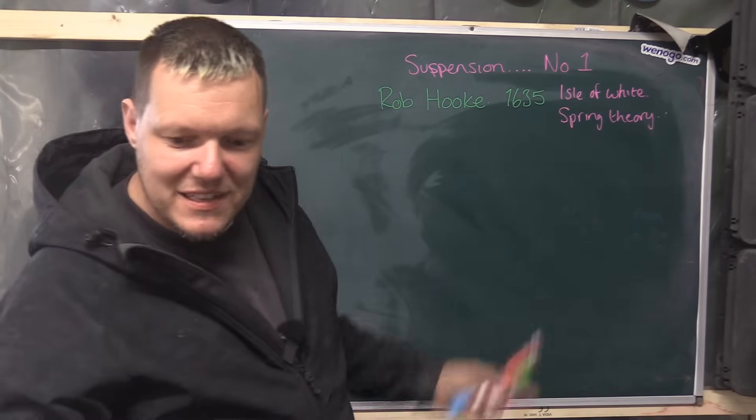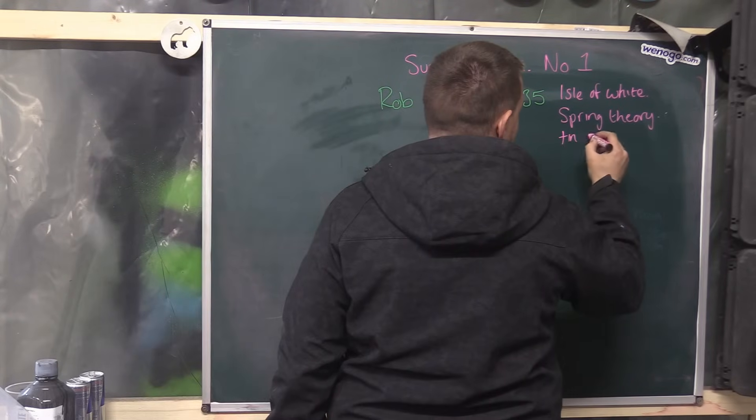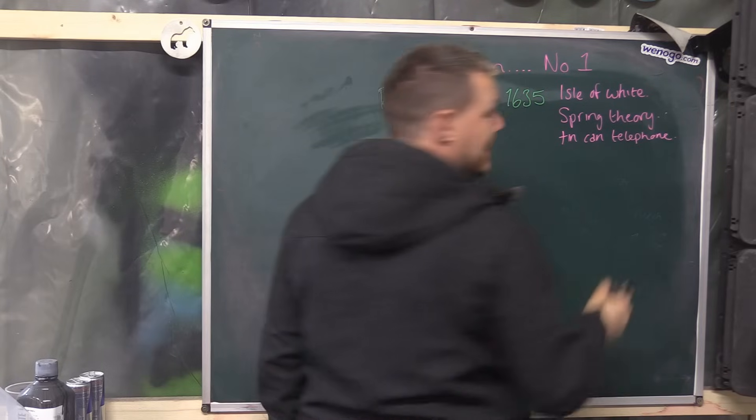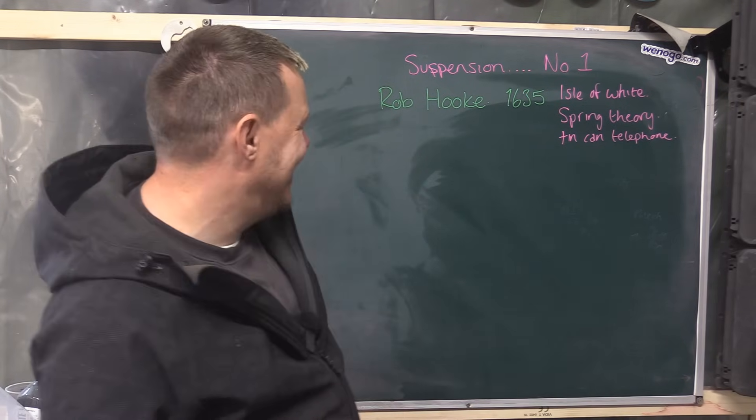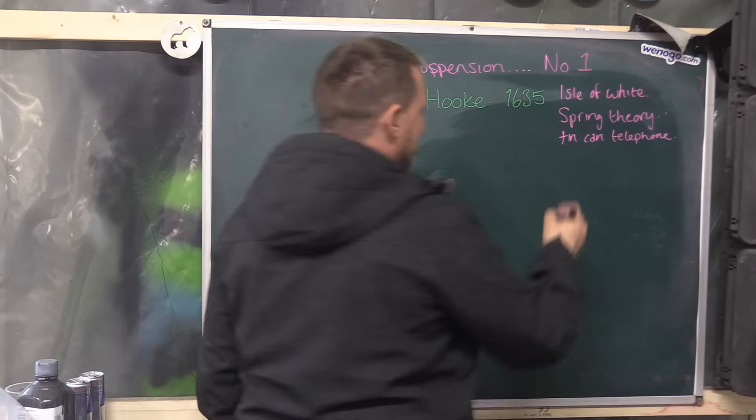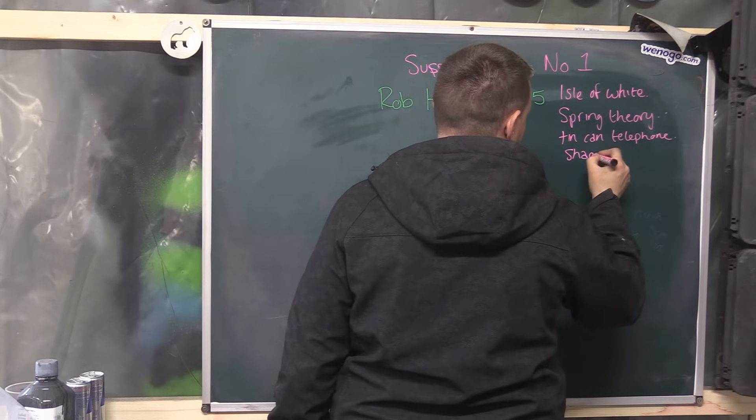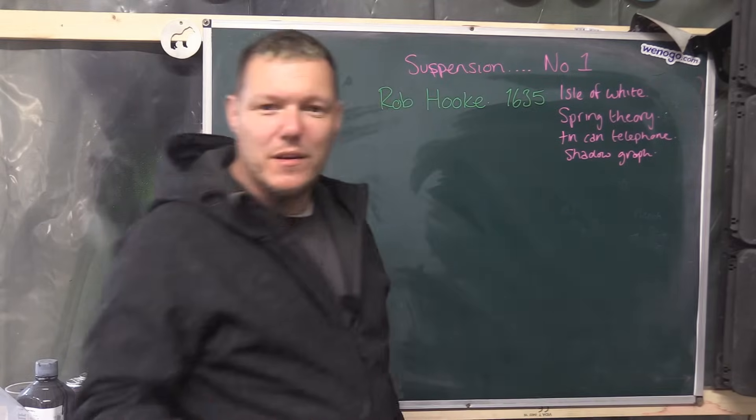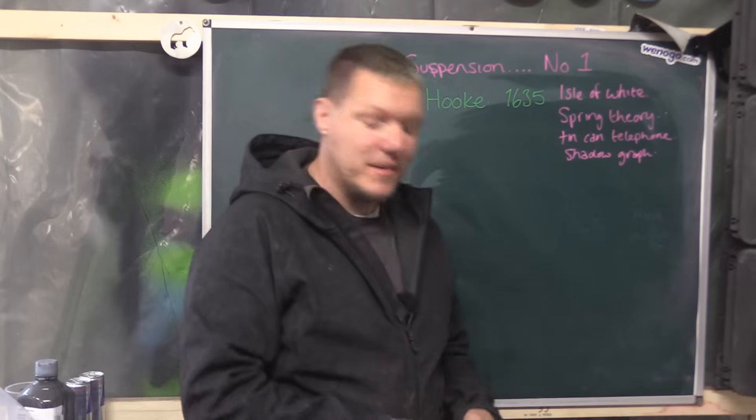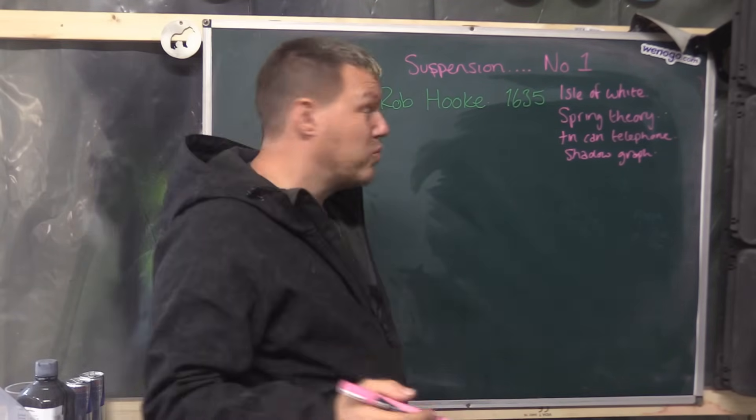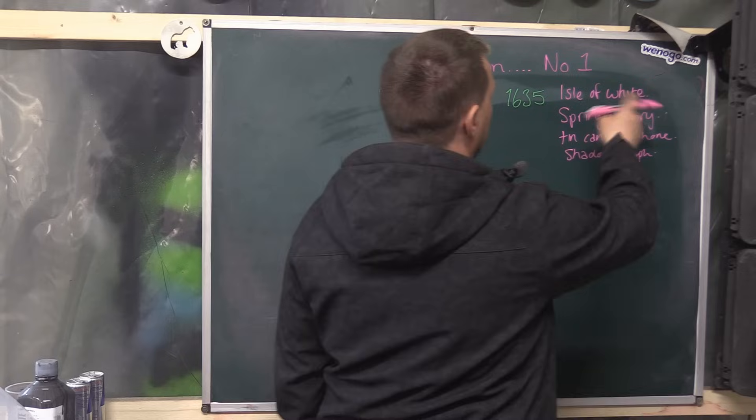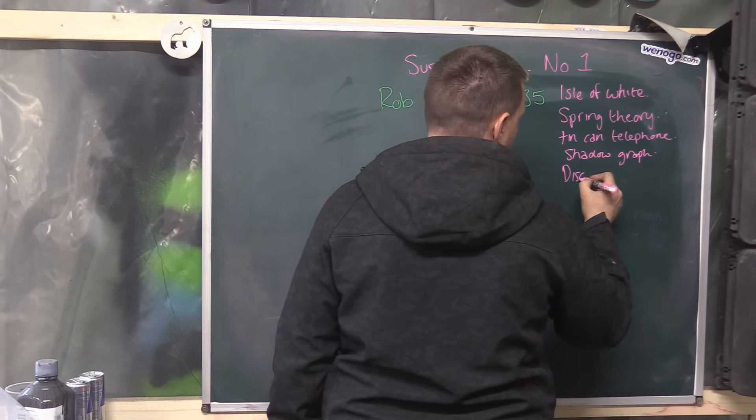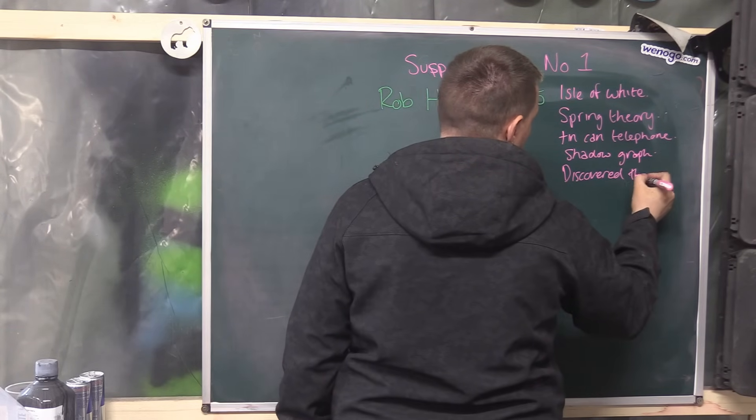But he also did the tin can, the tin can telephone. So you know how you were playing around as a kid? He did that seriously. Tin can, what is it, the shadow graph, which is one of my favourites. Shadow graphs are really, really good. He also did a lot of stuff in microscopy.